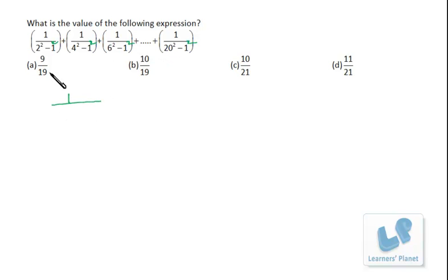So it would be 2 minus 1 into 2 plus 1, so what I can do is 2 minus 1 is 1 and 2 plus 1 is 3. Similarly, it is 1 upon 4 minus 1 and 4 plus 1, so it is 3 into 5.